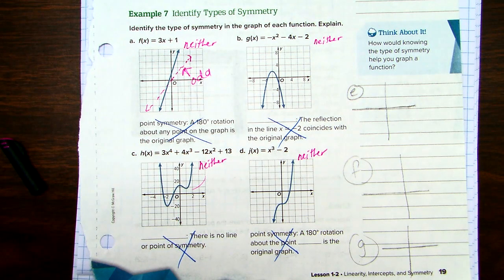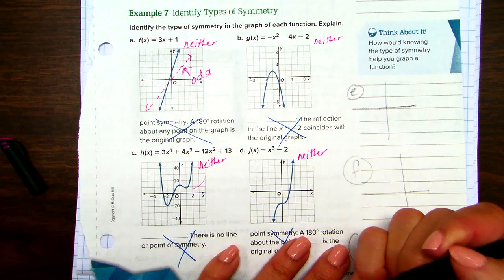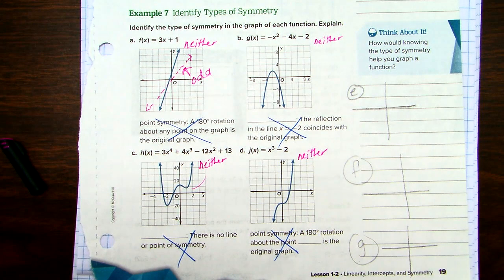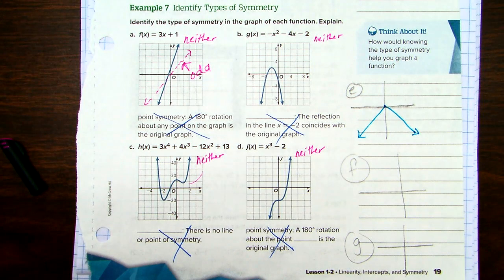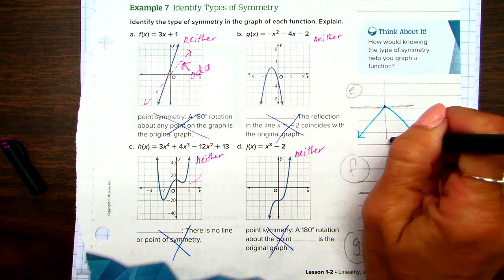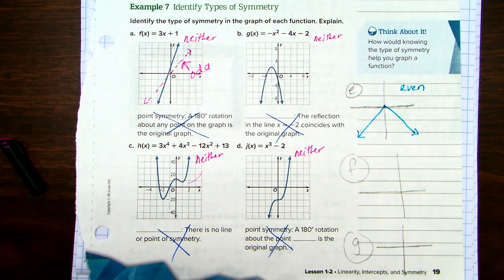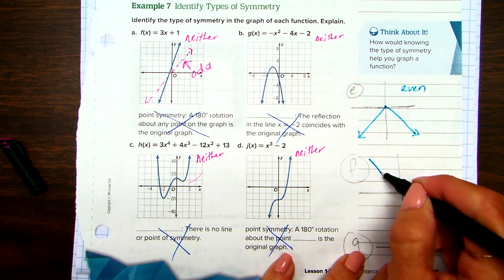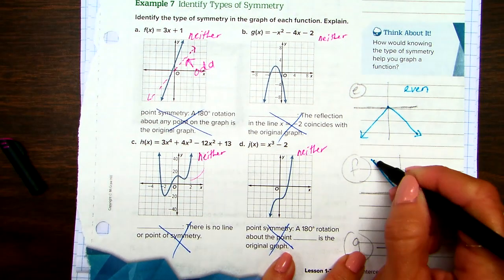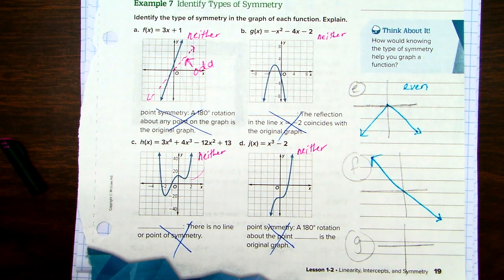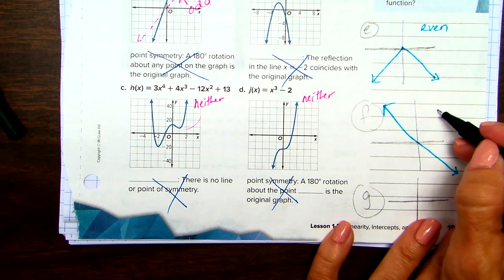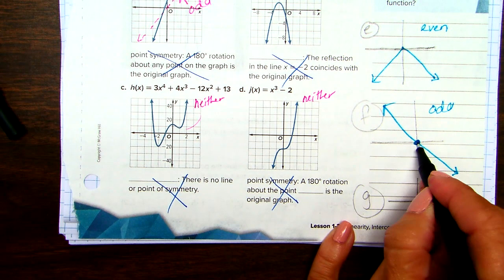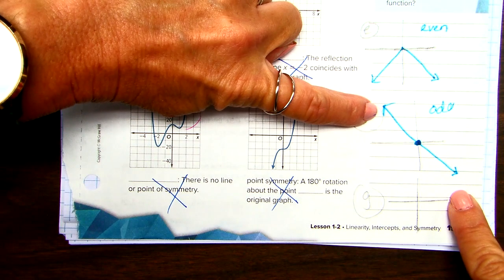Now, I'm going to give us some great examples of other ones. If I gave you this graph. Even, odd, or neither. Even. Yeah. The y-axis breaks it right in half. So this would be an example of an even.